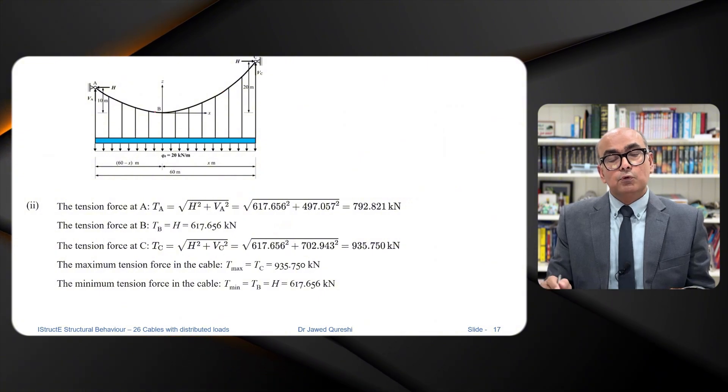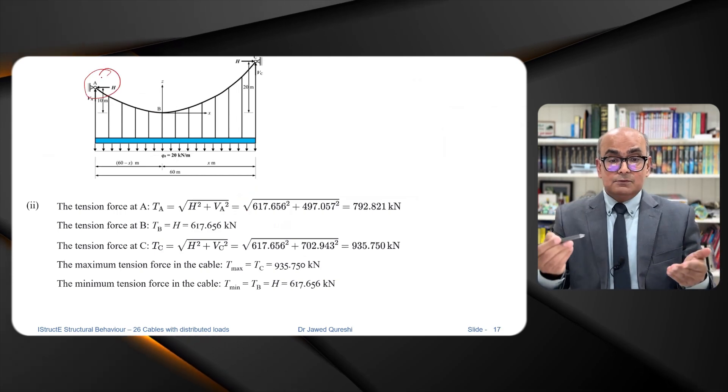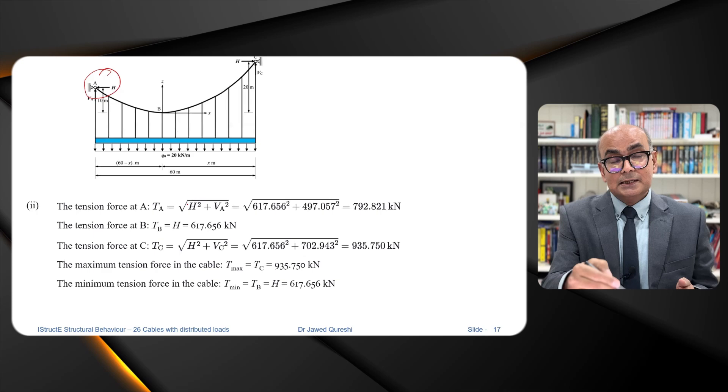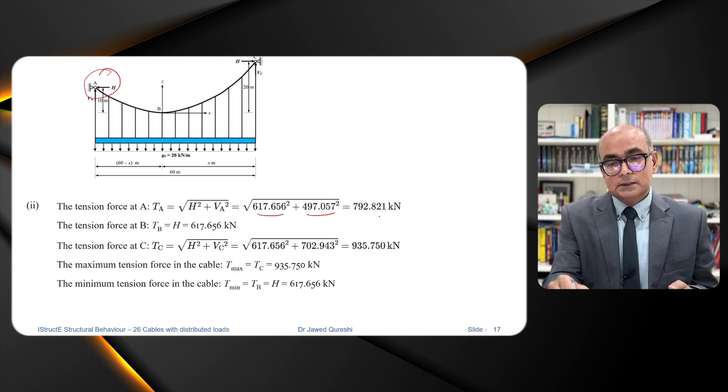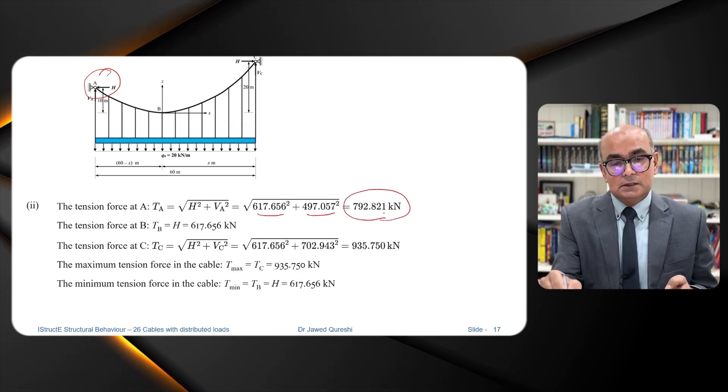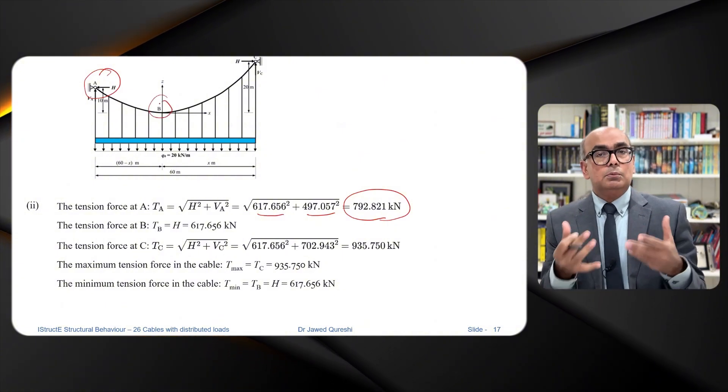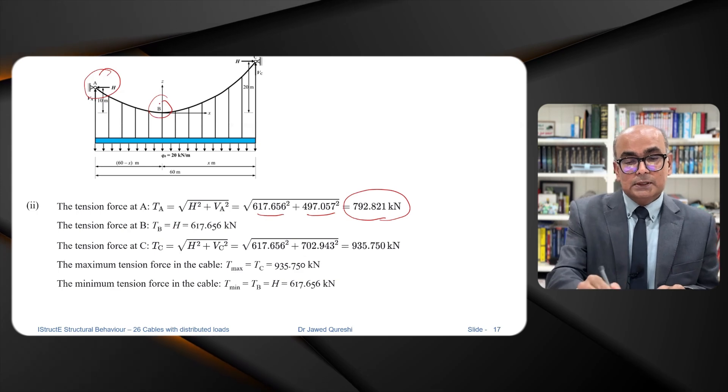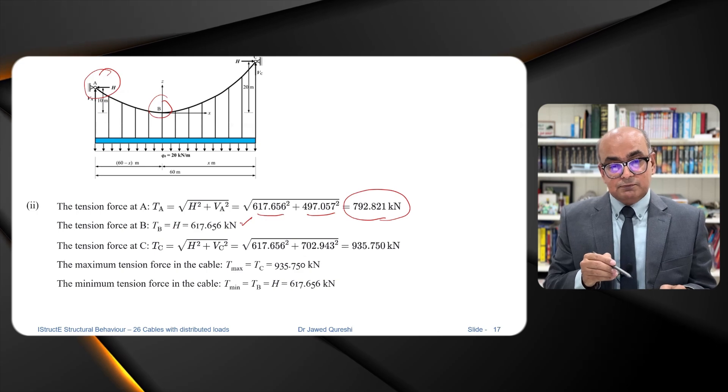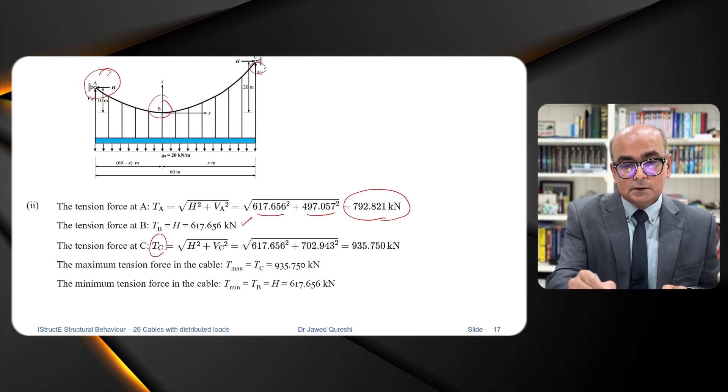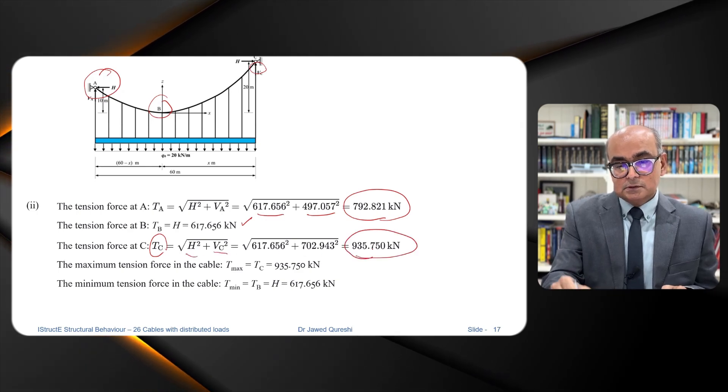Now we have to find out tension force at A. So tension force at A will be equal to resultant force and we find out resultant by saying square root of H square plus VA square. These values are already there. So from here we get tension as 792. At point B you can see there is no vertical component over here. That's the reason that it is directly equal to the horizontal reaction which is 617.65. At point C on the other hand you will have H square plus VC square and this will give us 935.